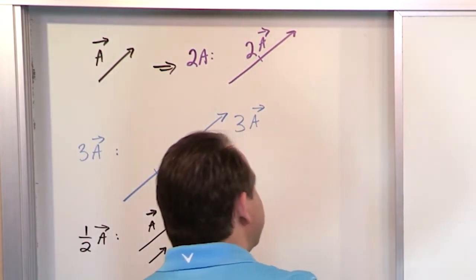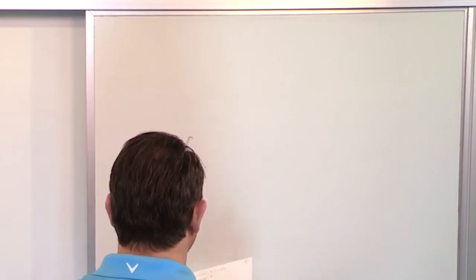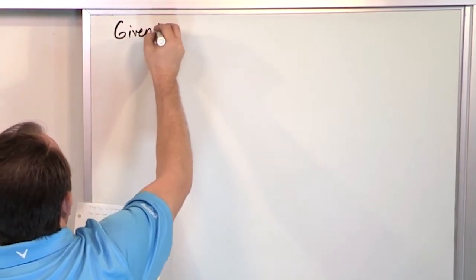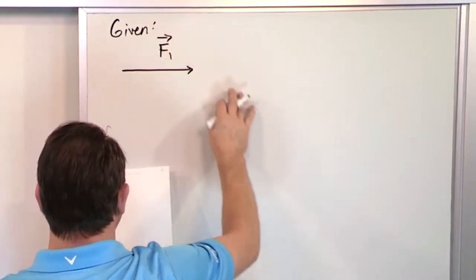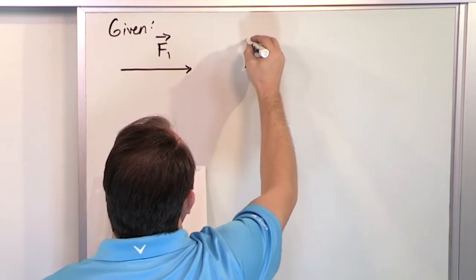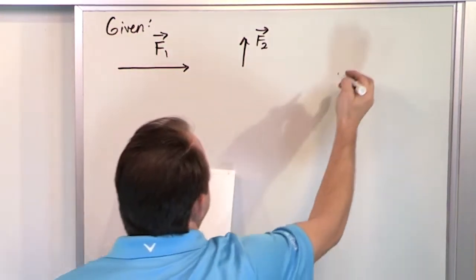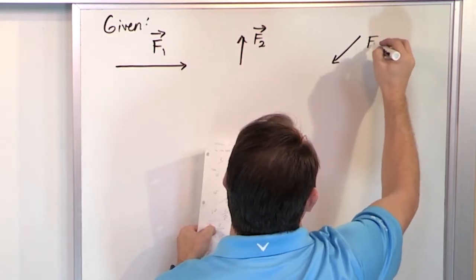So let's just do one quick example of adding vectors where we're also multiplying by scalars. So let's say you're given the following setup. Let's say you have a vector horizontal. We call that one F1. Let's say you have a vertical vector slightly shorter. We call that F2. And let's say we have a vector kind of cocked to the lower left like this. We call that F3.